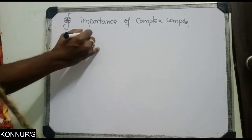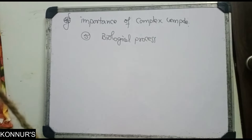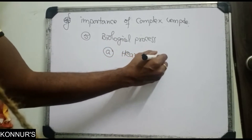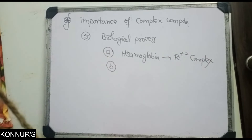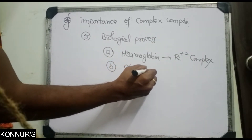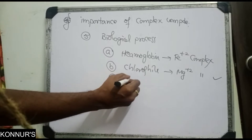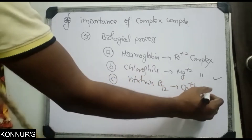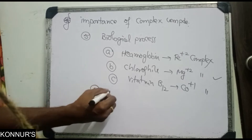In biological processes, complexes are also very important. Hemoglobin contains an Fe2+ complex compound. Chlorophyll contains Mg2+ also in the form of a complex. Vitamin B12 contains cobalt in the +1 oxidation state, also as a complex.